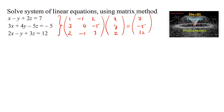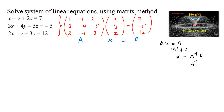This is in the form AX equals B. In the matrix method, the system AX equals B has a unique solution if the determinant of A is not equal to zero. In that case, X equals A inverse times B, where A inverse equals 1 over det(A) times the adjoint of matrix A. Let's find the determinant for this question.